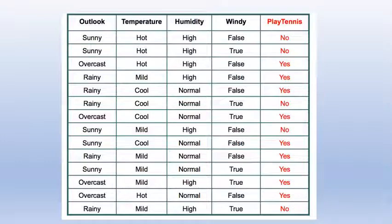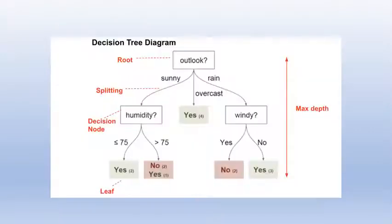Let's go to the decision tree. This is the basic decision tree. You can check the results in the net. If you have a test, you can take a list of results.